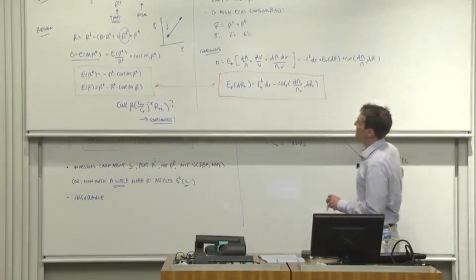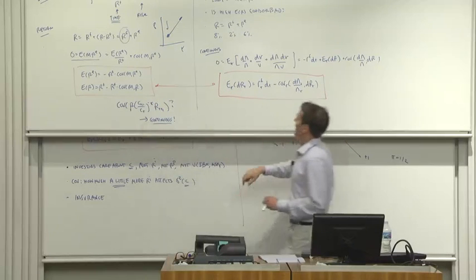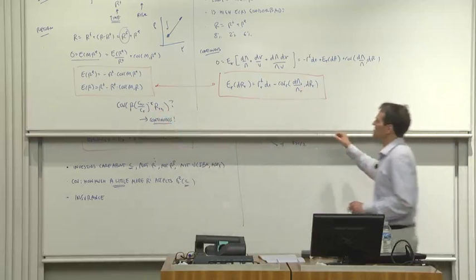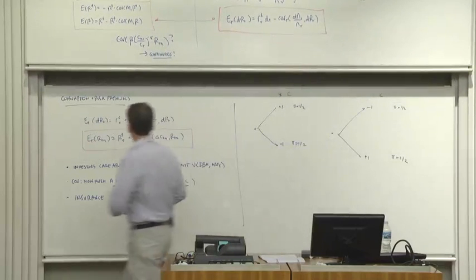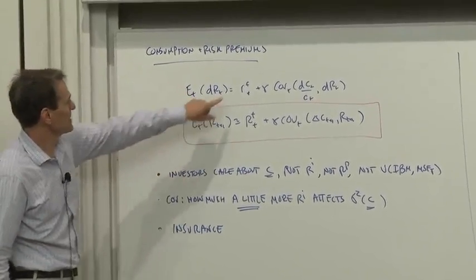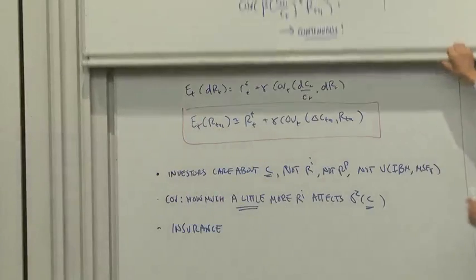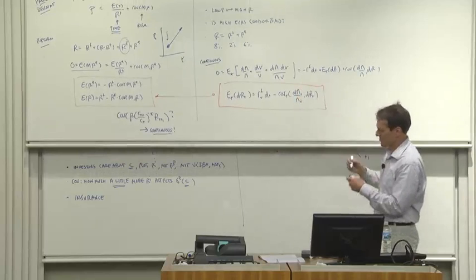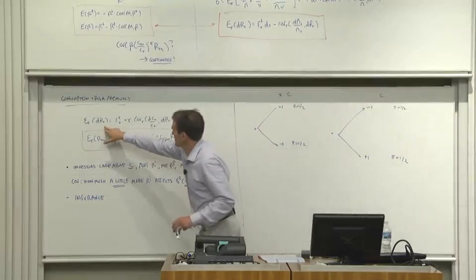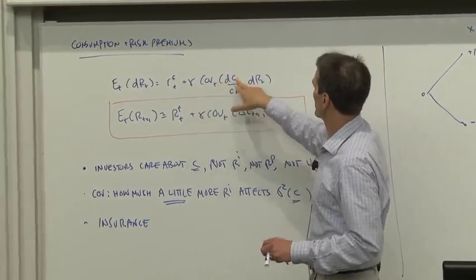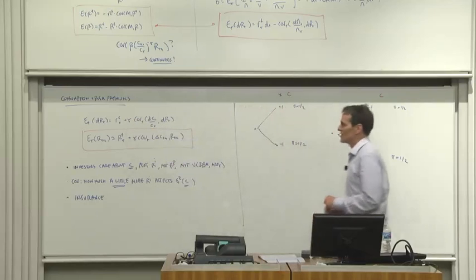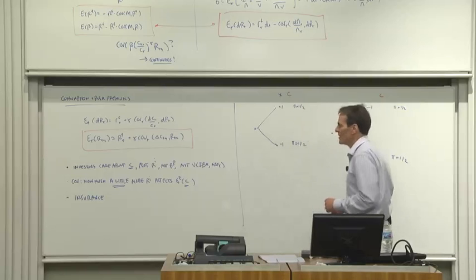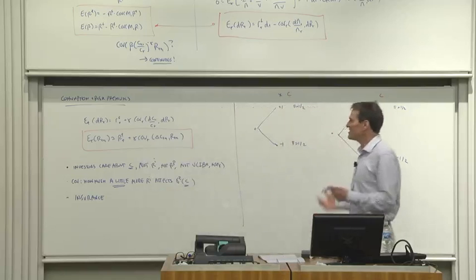We've thought about risk premiums expressed as expected returns in both continuous and discrete time, and now we're ready to put consumption in and think about macroeconomic determinants — where do risk premiums really come from? With dλ over λ, the only term that remains is the Itô term where the shock to consumption growth hits the shock to return. So the final result is: expected return equals risk-free rate plus covariance of consumption growth with return, multiplied by the risk aversion coefficient.